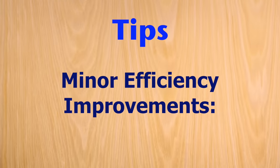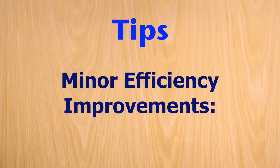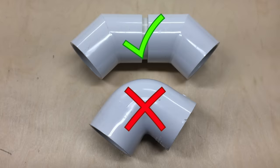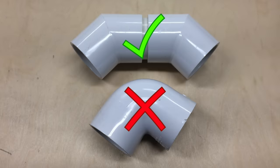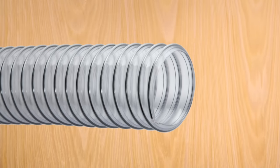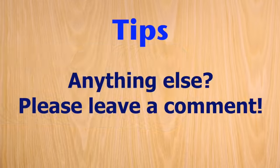Minor efficiency improvements can be made here and there, but remember that these are minor and may or may not have a noticeable effect. For example, two 45 degree elbows are more efficient than one 90 degree elbow, or so I've been told. Likewise, Y connectors are supposedly more efficient than T connectors. If you can find flexible tubing that's smooth on the inside, it's probably more efficient than tubing that's ribbed on the inside. If you have other efficiency tips, please leave them in the comments. Thanks!